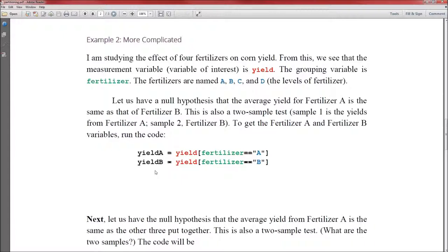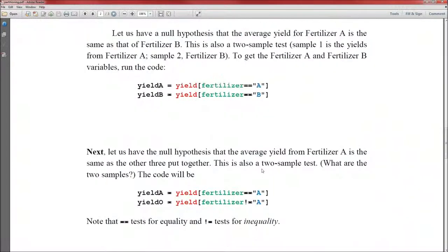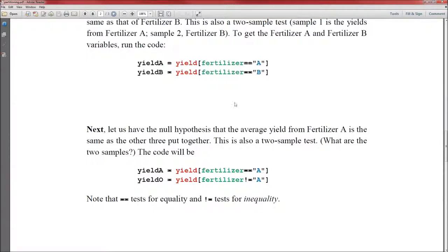Yield, fertilizer, B. Variable of interest, grouping variable, level of the grouping variable. Okay, so that deals with creating a yieldA and a yieldB.